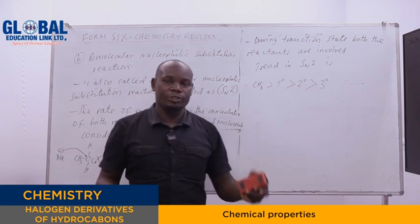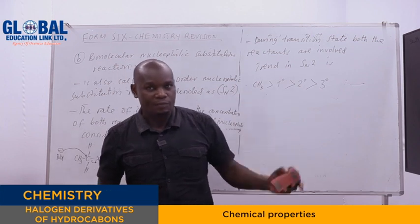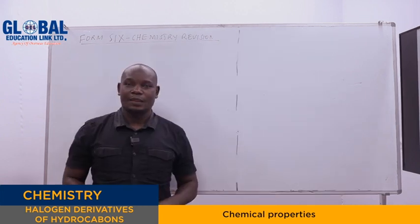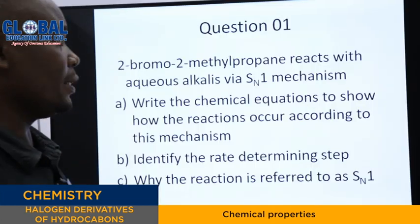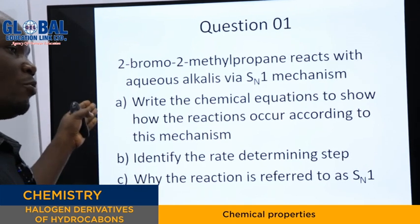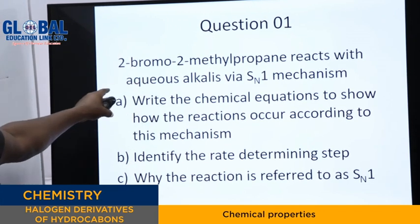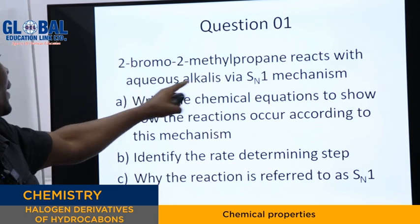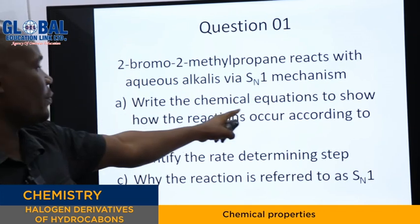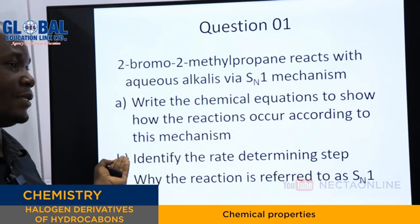After a short break, we will now see some examples or questions which might appear in the exam. Once they appear, you can follow this mechanism and get the answer correctly. Welcome back to our lesson. We are now going to look at some sample questions that may appear in your exams, involving the use of this knowledge we have discussed. The first question is that 2-bromo-2-methylpropane reacts with aqueous alkali via first order nucleophilic mechanism. We are asked to write the chemical equations to show how the reaction occurs.